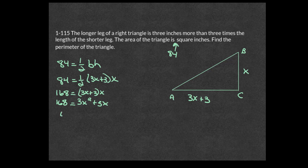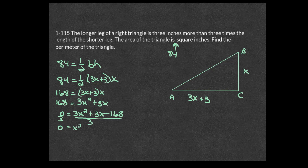We now have 3x squared plus 3x minus 168 equals 0. Since all three terms are divisible by 3, divide everything by 3 to get x squared plus x minus 56 equals 0, because negative 168 divided by 3 is negative 56.